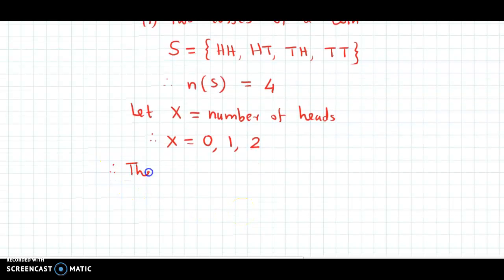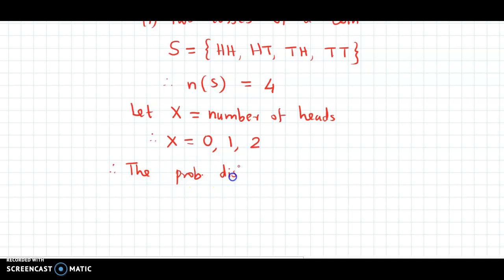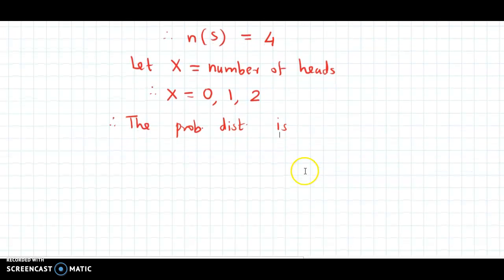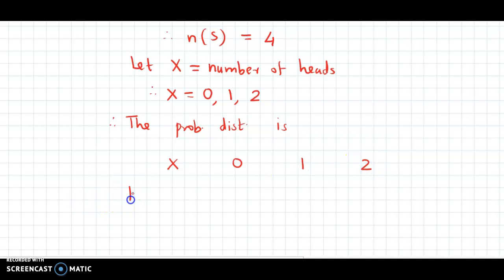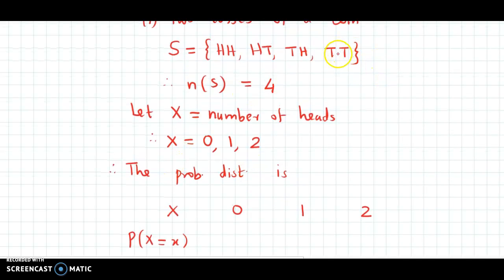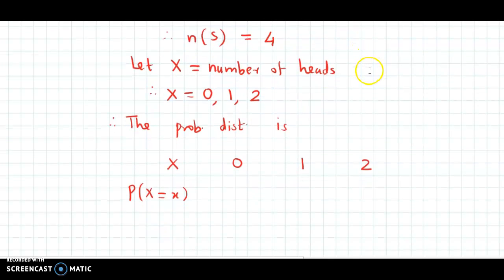Therefore, the probability distribution is: X takes values 0, 1, and 2 with respective probabilities P of X. For X equal to 0 — that means no heads — the outcome is tails tails, in which the number of heads is zero. So the probability at X equal to 0 will be 1 by 4.